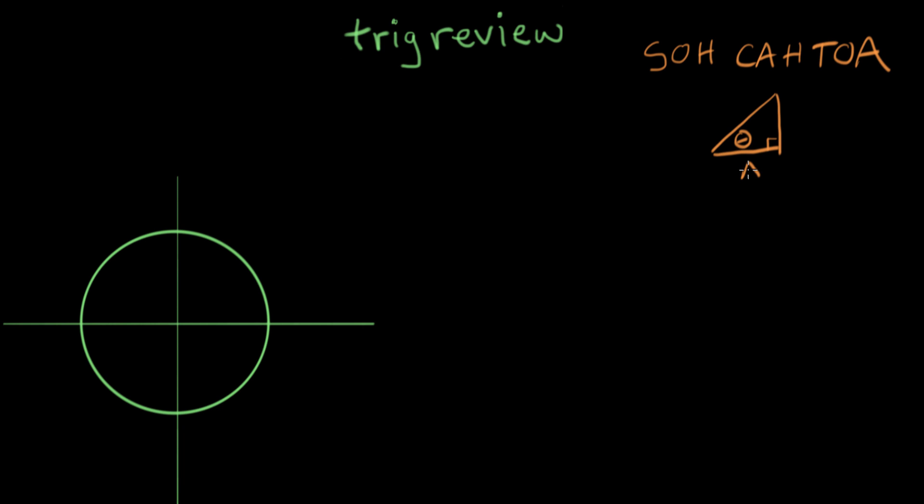And we label the sides of the triangle as this is the side adjacent to theta, this is the side opposite of theta, and this side over here is the hypotenuse of the triangle. So this says that the definition of sine of theta equals opposite over hypotenuse.